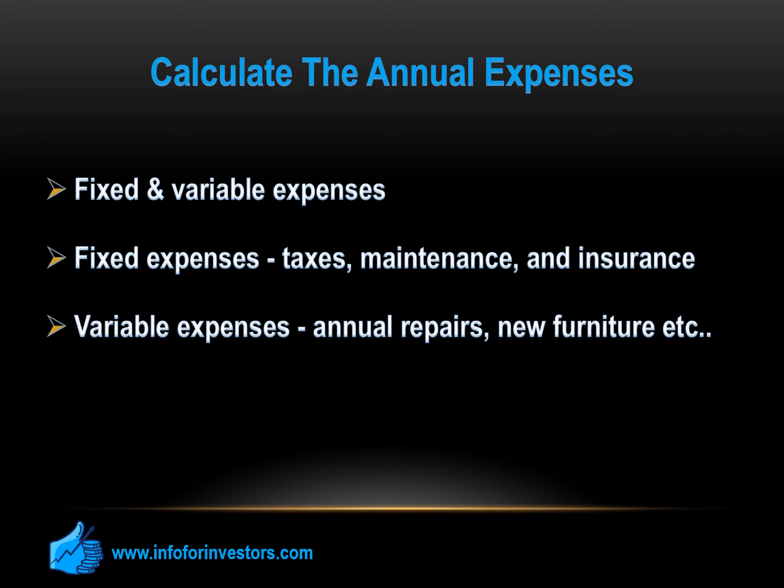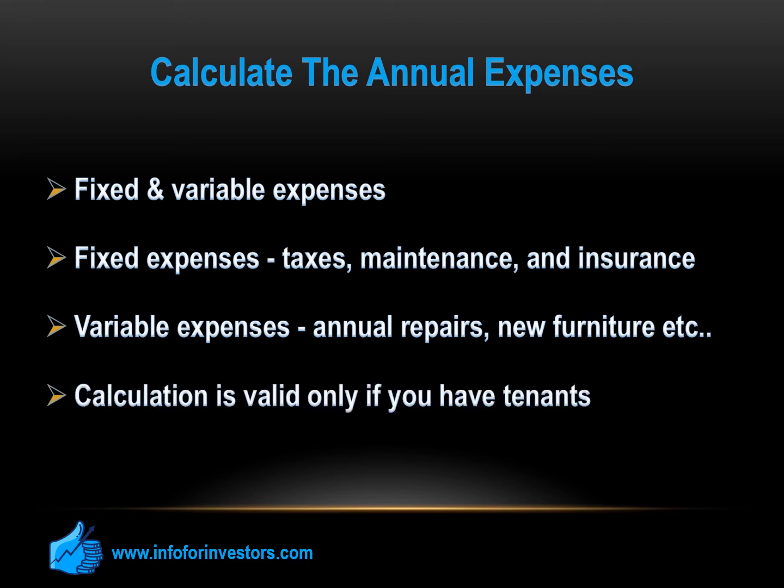Even though it's hard to estimate how much the variable expenses will be, set aside an amount of money equal to fixed annual expenses. Assuming the latter is $1,500, then set aside $1,500 for variable expenses — this makes $3,000. If the annual rent is $10,000, then you will make a $7,000 profit.